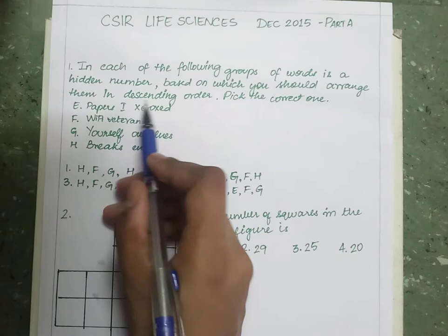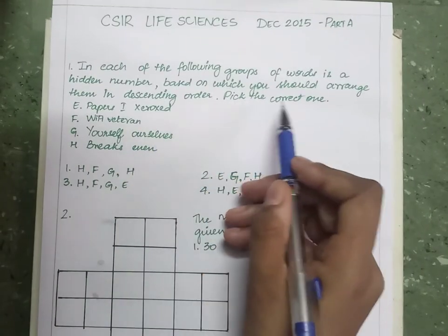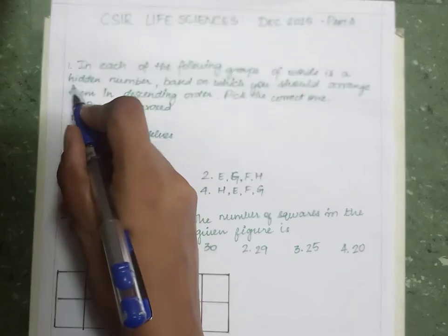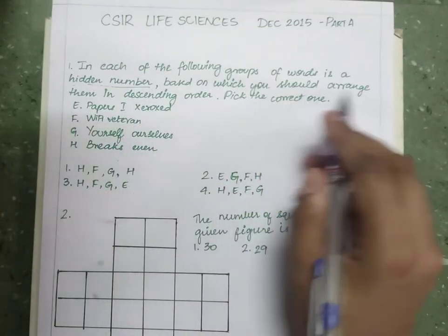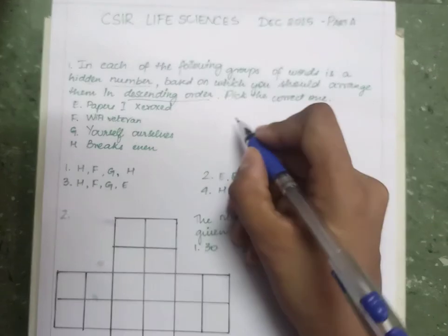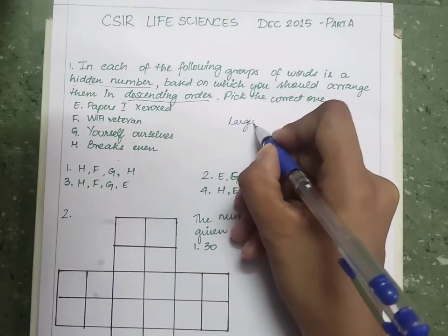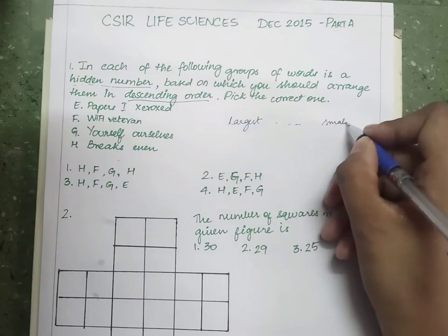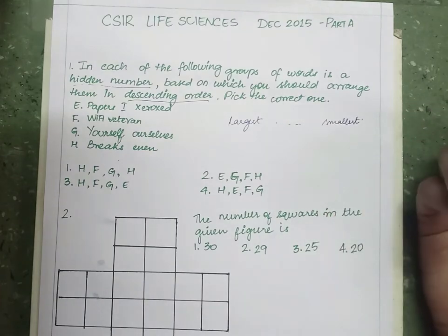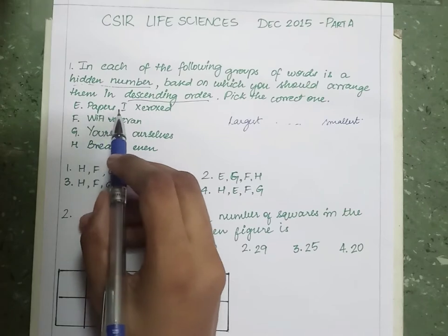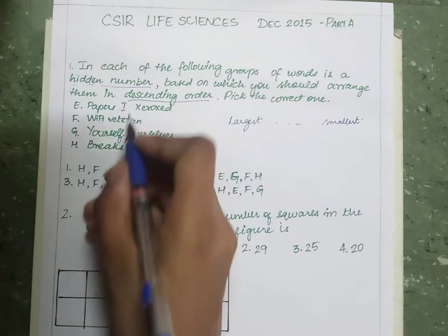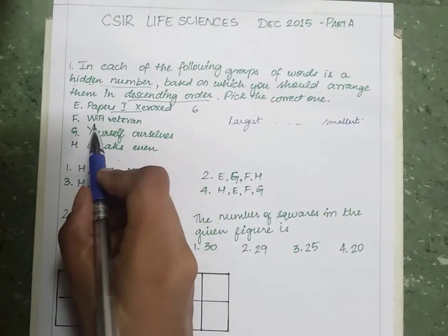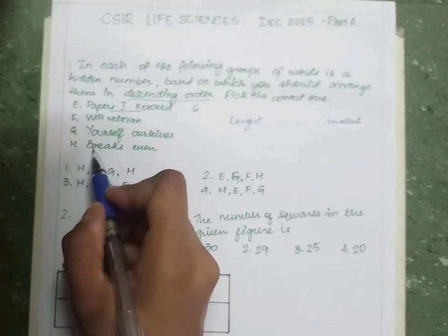There is a hidden number in each of these words and we should arrange them in descending order — largest first, then the second largest, and so on. So here: 'papers' — we see that six is present. Next, 'Wi-Fi veteran' — we see five is present.